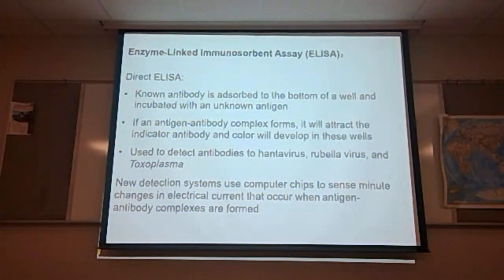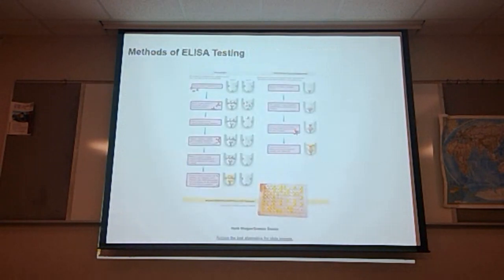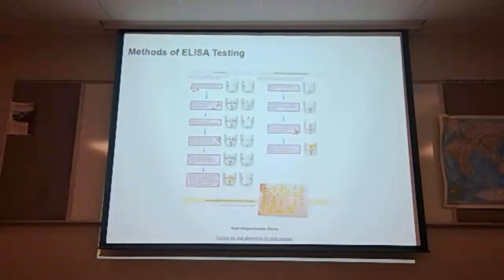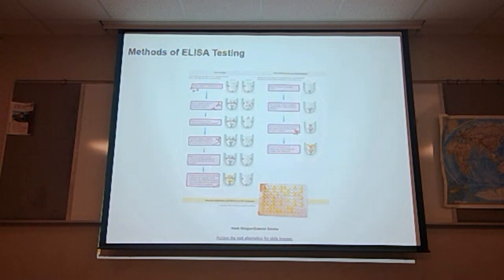The newest detection systems use computer chips to sense minute changes in electrical currents that occur when antigen-antibody complexes are formed. The indirect ELISA — the one done on campus — requires a few more processing steps, while the direct ELISA requires an incubation time but not the additional processing steps.